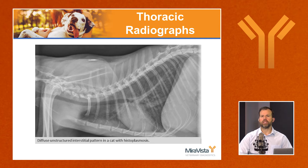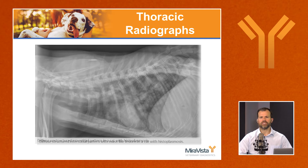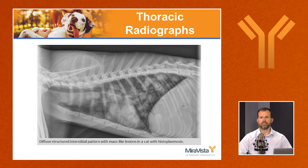An important thing to remember about thoracic radiographs in histoplasmosis is that any pattern is possible — histo can do anything. We think of it as a diffuse structured interstitial pattern, but it can present as a completely unstructured interstitial pattern with overall haziness and no obvious nodules. Or, as in one cat, it presented with many large, well-defined masses that initially appeared like metastatic neoplasia — but were granulomas filled with histo organisms. That cat had two other household cats also ultimately diagnosed with histo.